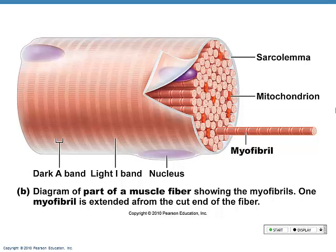We also find lots of mitochondria in muscle cells. We need a lot of mitochondria because this is where most ATP is made. When we talked about the cell and that organelle, what did we call it? The powerhouse of the cell — because that's where most ATP is produced.